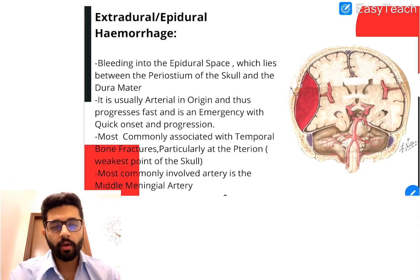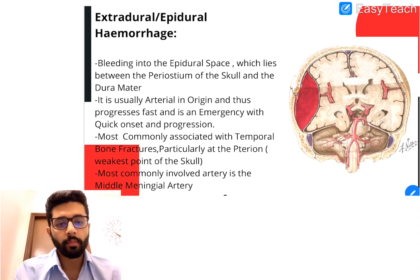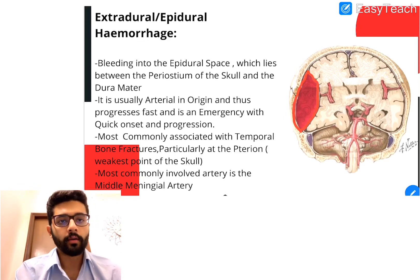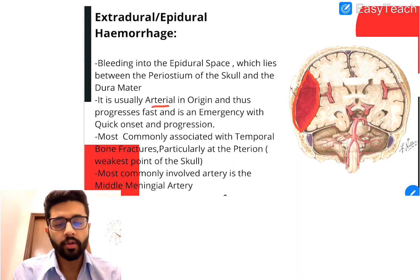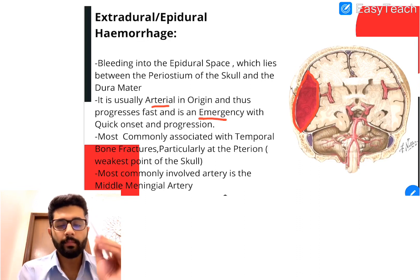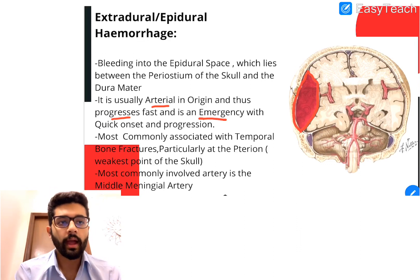Now let's talk about the most important one — the extra-dural or epidural hemorrhage. This is bleeding into the epidural space, the space between the endosteum of the skull and the dura mater. This bleed is usually arterial in origin and therefore it is an emergency. Arteries are a high-pressure system, so any bleed which is arterial in origin will show rapid progression and automatically becomes an emergency.